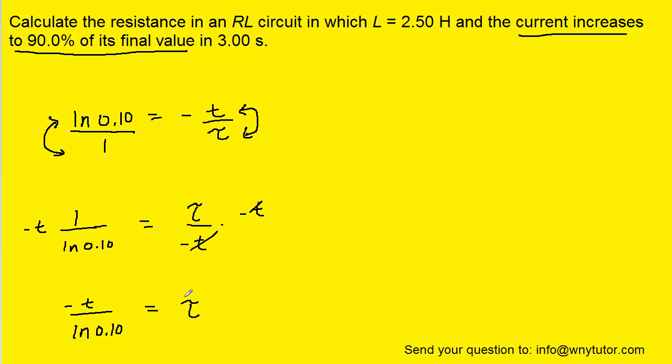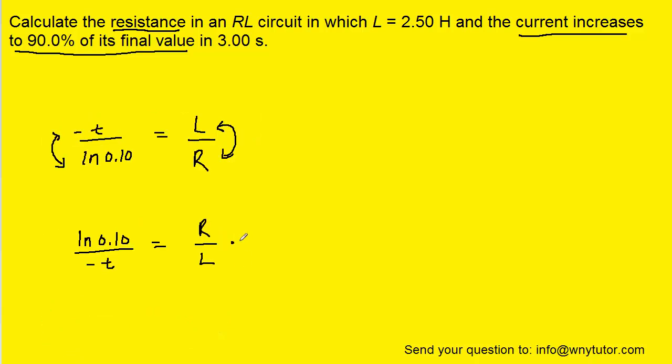Now, it's going to be useful to remind ourselves that tau is equal to the inductance divided by the resistance, or L divided by R. So we're going to substitute L divided by R for tau. And the reason for that substitution is that we're trying to calculate the resistance. Now, the resistance is trapped in the denominator, so one more time we're going to invert both sides of the equation. And then finally, we can multiply both sides of the equation by L.